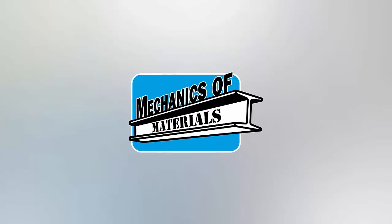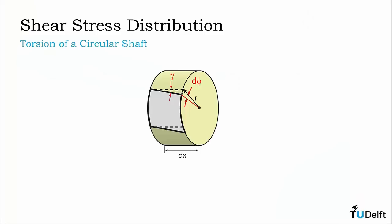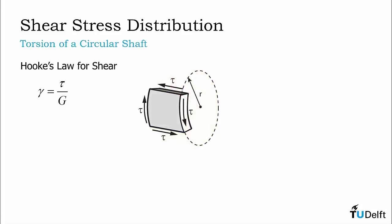Now that we understand the strain distribution within a shaft subjected to torsion, let's take a closer look at the stress distribution. In order to transform the strain distribution into stress, it is necessary to recall Hooke's law for shear as shown here. It is also necessary to visualize the pure state of shear stress acting on our infinitesimal element that will cause the shear deformation we observe. Finally, we must recall the linear shear strain distribution from the previous slides.